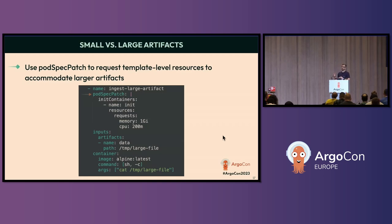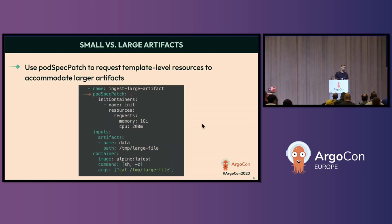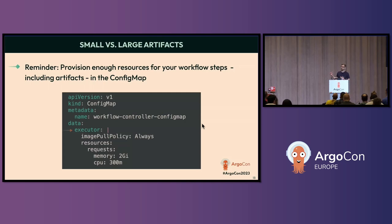Next, we want to get into how you want to provision resources so that processing artifacts of different sizes doesn't kill your workflows. An important feature to know here is pod spec patch, which provides template-level resources to accommodate a larger artifact or to consolidate many artifacts in a step faster. You provision resources here in the workflow definition for the init container so you don't run into an out-of-memory issue. As a reminder, definitely provision enough resources for the executor as well — even if you're using pod spec patch, make sure you have enough resources for the whole workflow including your artifacts.